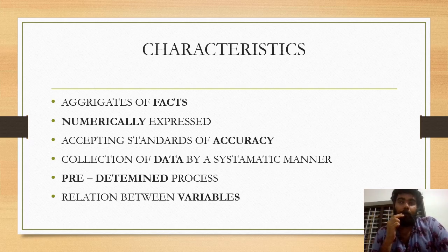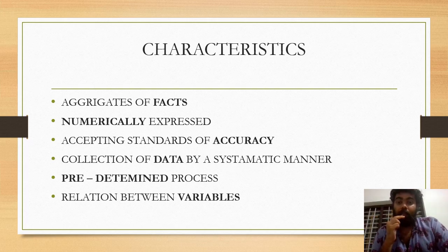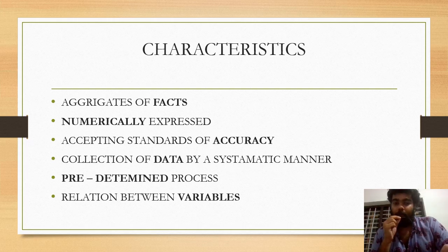Sixth characteristic: Relationship between variables. Variables are compared — for example, items in a class are compared to each other. Grade level is a variable. So the characteristics are: aggregate of facts, numerically expressed, accuracy, data, predetermined purpose, and variables.